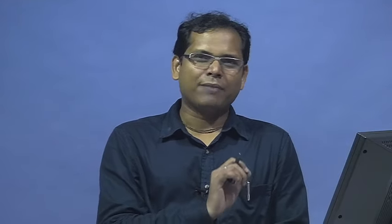Whenever we see a dot, question mark, or exclamation mark, we need to decide: is it the end of the sentence or not? Each data point must be divided into one of these two classes, making this a classification problem — specifically a binary classification problem. We have two classes: end of sentence, or not end of sentence.